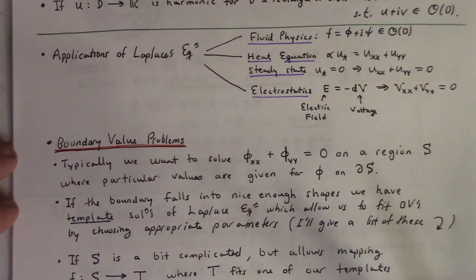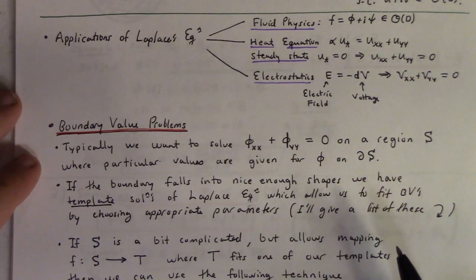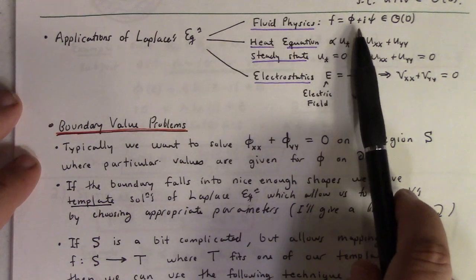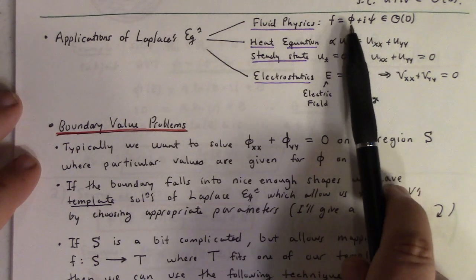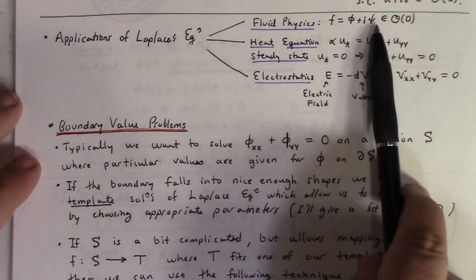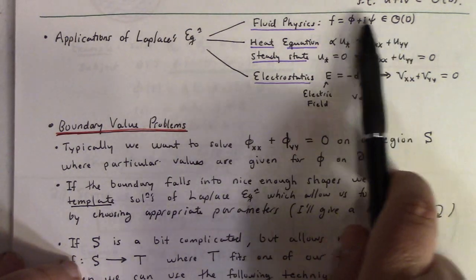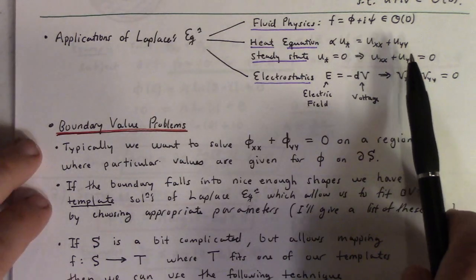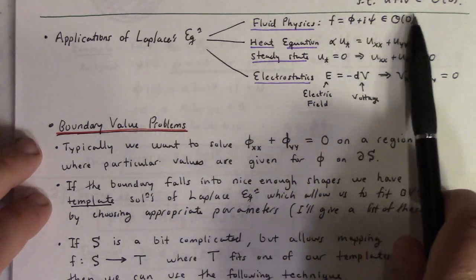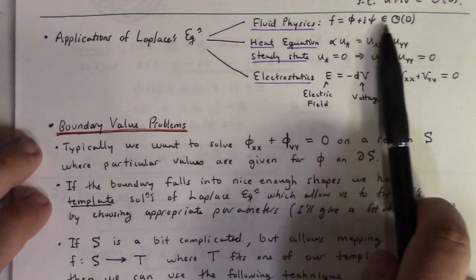Now, what are the applications of Laplace's equation? There are three major ones we tend to talk about in the standard course. First, fluid physics — if you have φ plus iψ, ψ is the stream function and φ is called the potential. I have a couple of pages in the notes devoted to unwrapping what that all looks like, but I won't assign problems getting into the nuts and bolts of the fluid physics this semester.